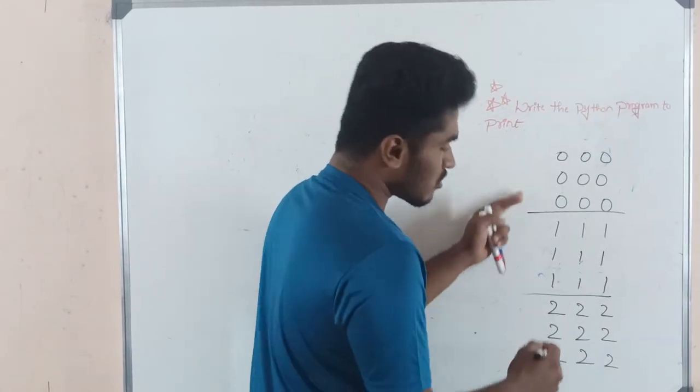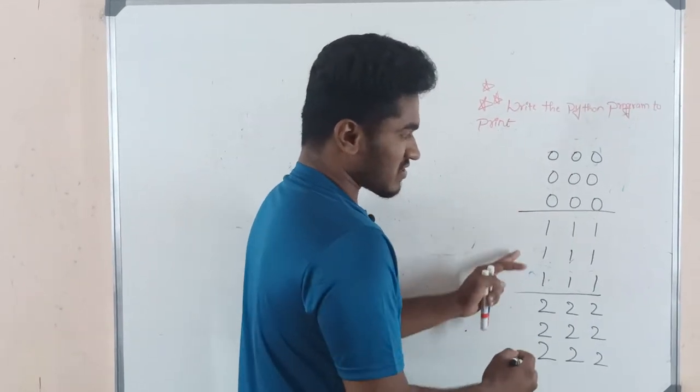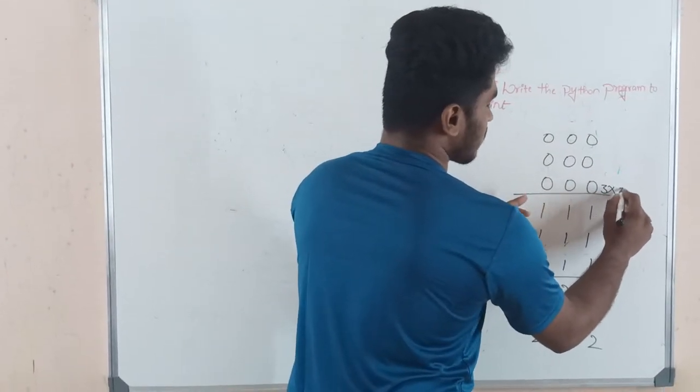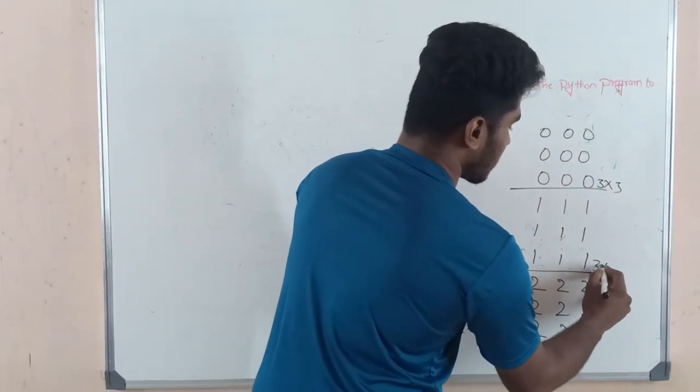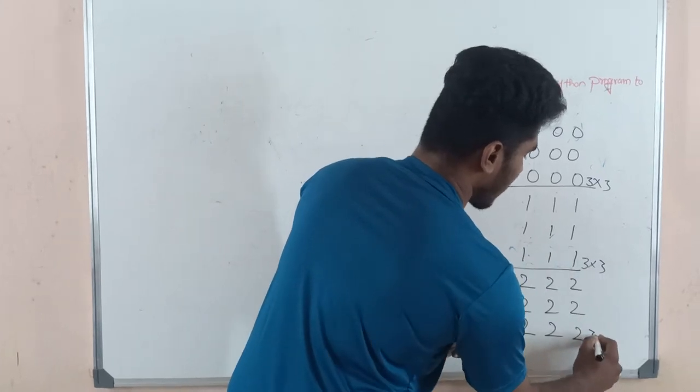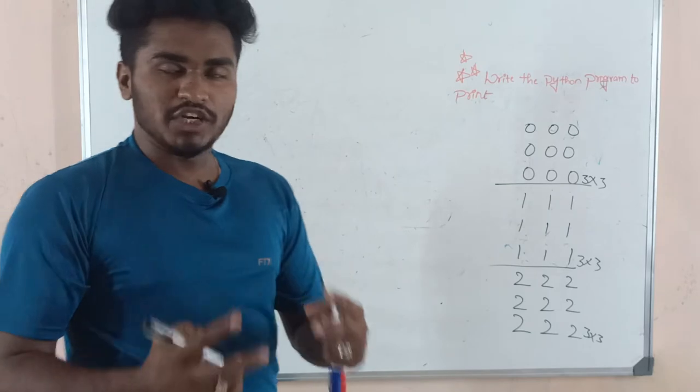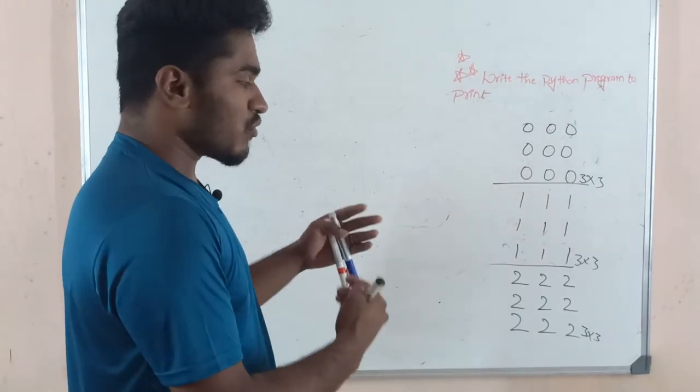These are the numbers, right? See here, this is a 3x3 matrix. This one also is a 3x3 matrix. This one also is a 3x3 matrix. I know that for printing one matrix we need two for loops, but here we have three matrices.